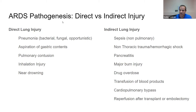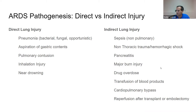ARDS pathogenesis can be broadly divided into direct and indirect injury. A direct lung injury would be something like pneumonia, aspiration, contusion from trauma, inhalation injuries, or near-drowning affecting the lung itself. Indirect lung injury is where something not directly affecting the lung leads to ARDS — generally something causing a profound SIRS response, such as sepsis, pancreatitis, major burns, trauma, or transfusion. It's always important to think about what the cause is and whether it's indirect or direct.